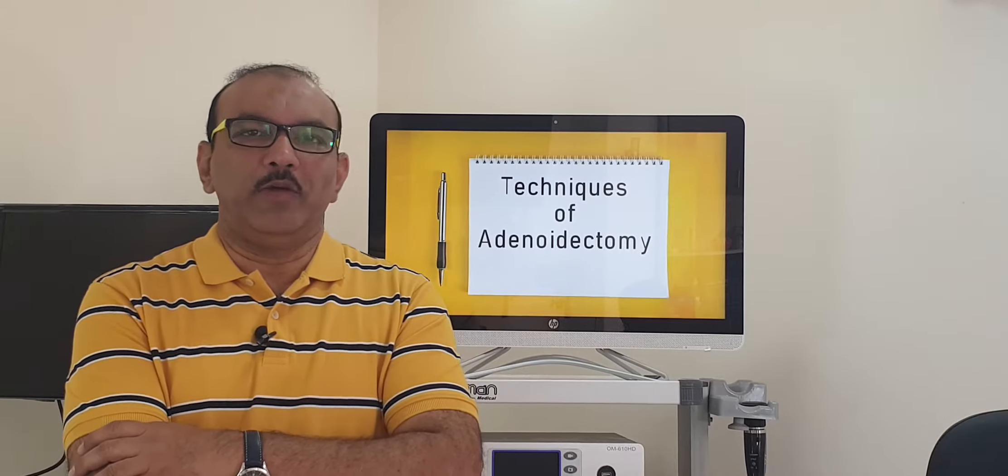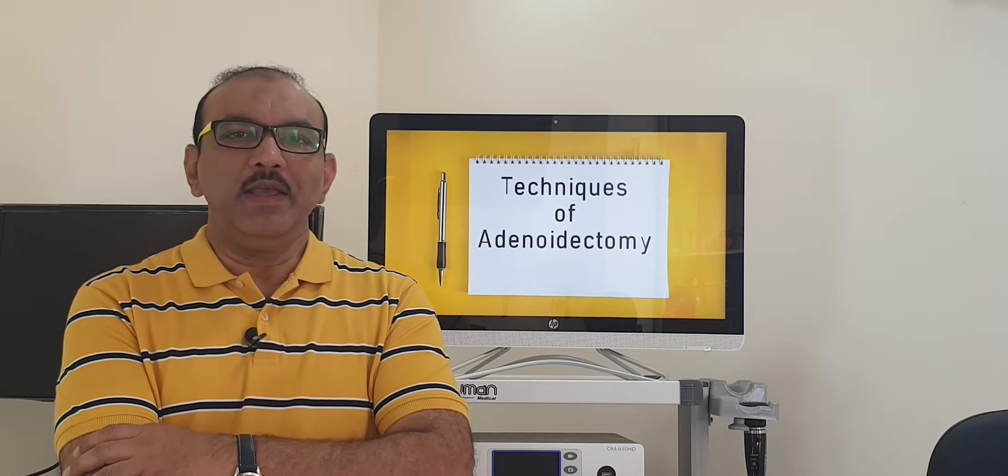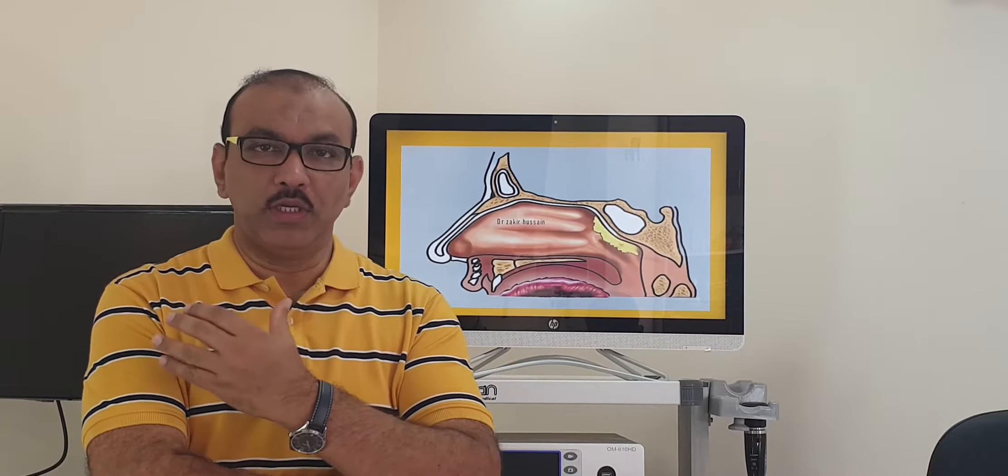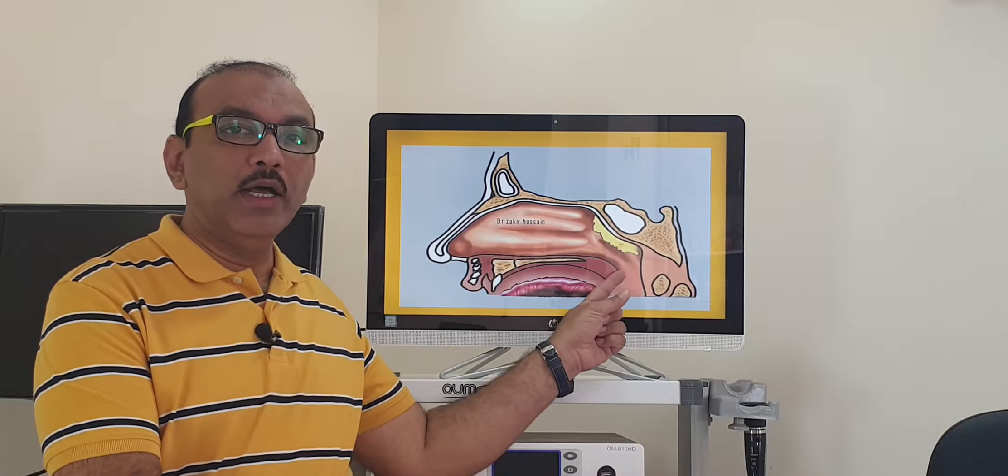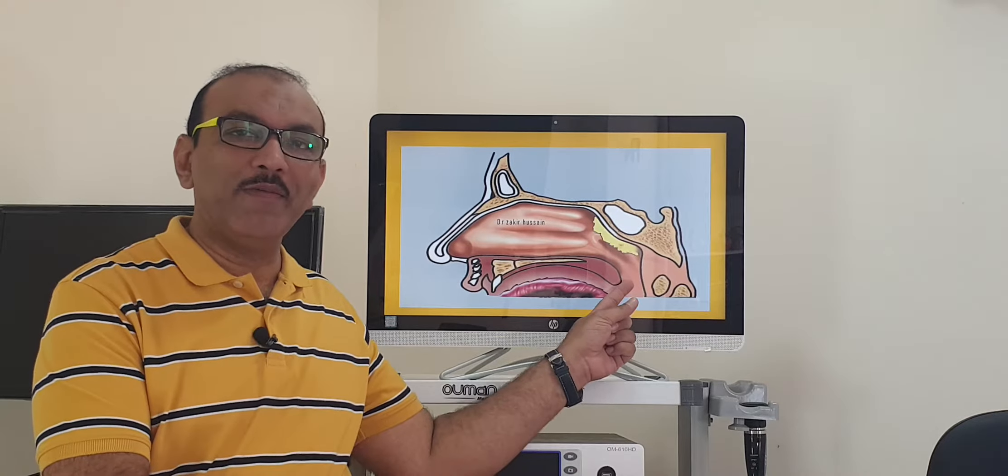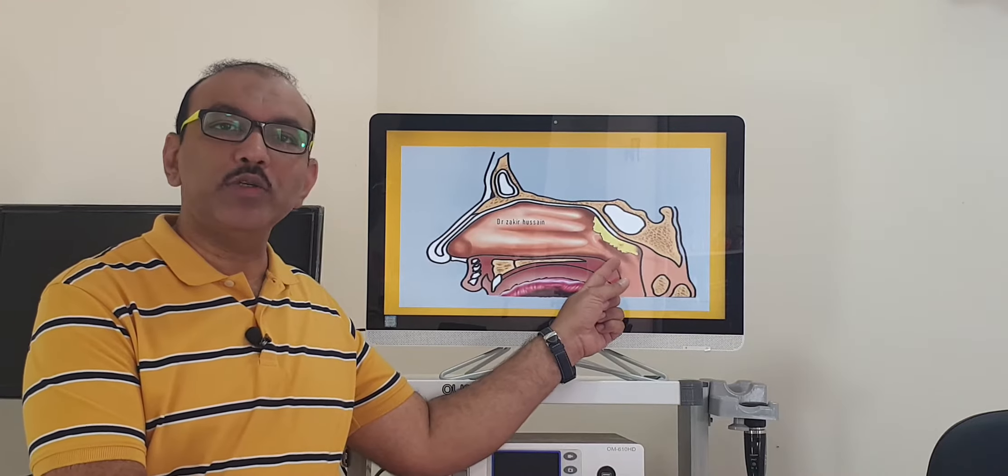Different techniques of adenoidectomy, that is the topic. Behind the nose, there is an area called the nasopharynx. Here you have a structure called adenoids, as you see in this picture.